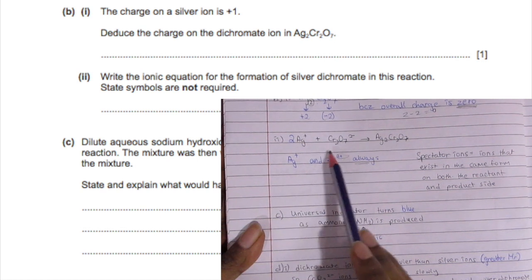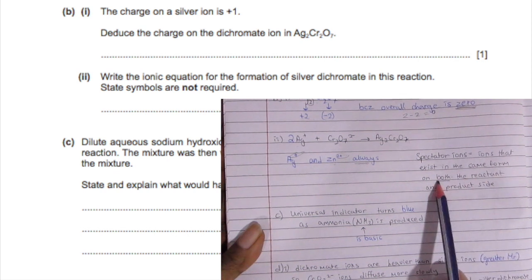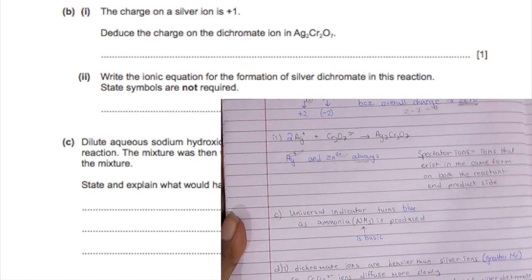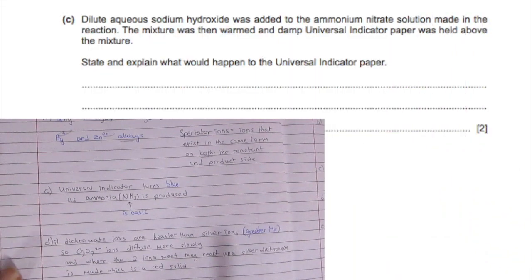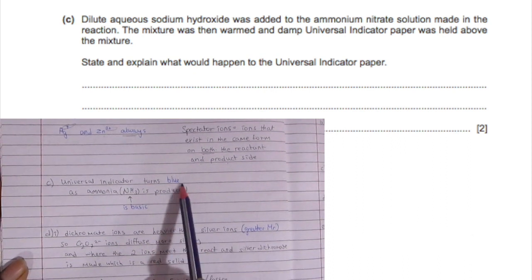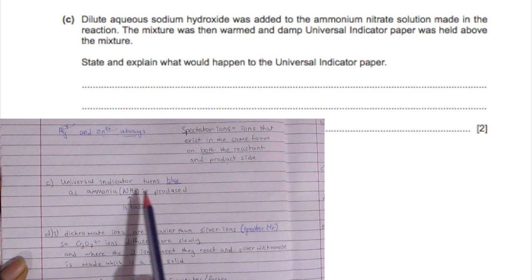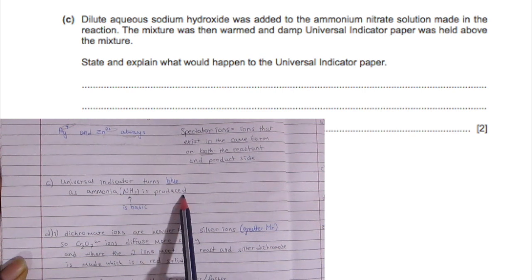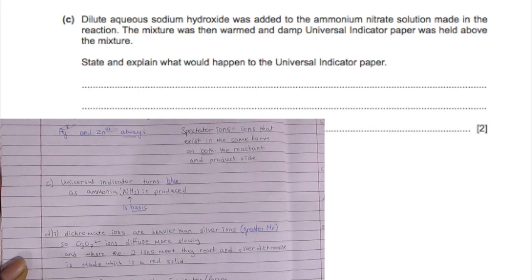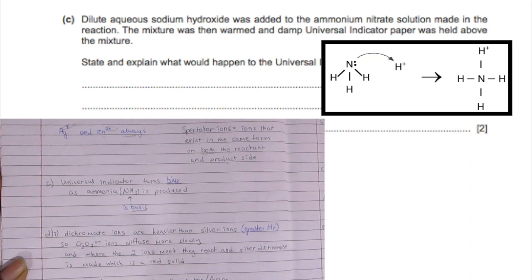For example, two silver ions plus one dichromate gives you one silver dichromate. Spectator ions exist in the same form on both sides, so they don't really change. The universal indicator will turn blue because ammonia is produced, and ammonia is basic. Anything basic can accept a proton. Hydrogen ion is H+, which is basically a proton, so you'll end up with ammonium ion.